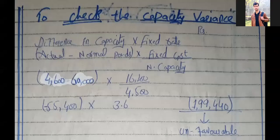To check the capacity variance, look at the difference in capacity. There are two capacities: actual and normal. Subtract normal from actual capacity and multiply by the fixed rate. Fixed rate equals fixed cost divided by normal capacity: 16,200 divided by 4,500 equals Rs. 3.6. Actual capacity 4,600 minus normal capacity 5,000 gives minus 400, multiplied by 3.6, giving Rs. 1,440 unfavorable capacity variance.